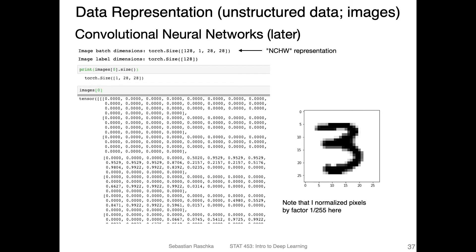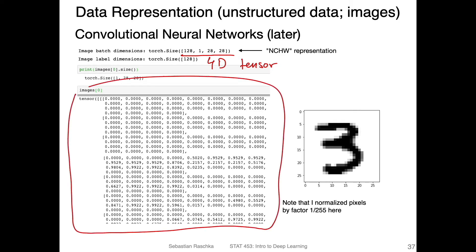In the context of PyTorch, when we work with unstructured data and later with convolutional networks, we would be working with the NCHW format. This would be a four-dimensional tensor, which I introduced in the first lecture of this course. Here's how it looks in PyTorch — in this case it's actually a three-dimensional tensor representing one single image, specifically the number three.